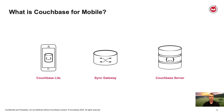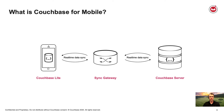Sync Gateway also handles authentication and authorization, basically securing access to that data and providing data orchestration capabilities. On the server side there's Couchbase Server, which is not so much the focus of this session. When all three are working together, it provides real-time data sync from the edge through Sync Gateway to Couchbase Server, and vice versa — changes made on the server side propagate in real time back out to the edge.